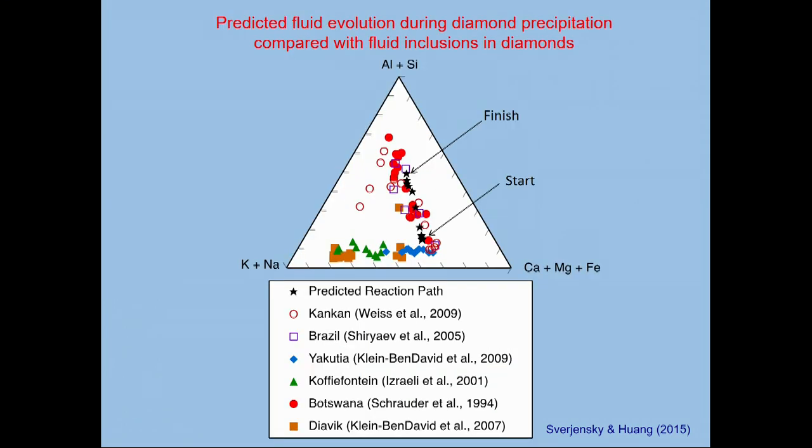The same reaction progress is shown here to show that the bulk chemistry of the fluid on this diagram progresses from here in the black stars to here from start to finish with potassium plus sodium, calcium, magnesium, and iron, and aluminum, silicon. And these black stars align reasonably well with a trend in worldwide fluid inclusion analyses in diamonds that have been studied for decades and are really our primary evidence for fluids and water in the deep earth. So this particular leg of this worldwide trend has been modeled by prediction.